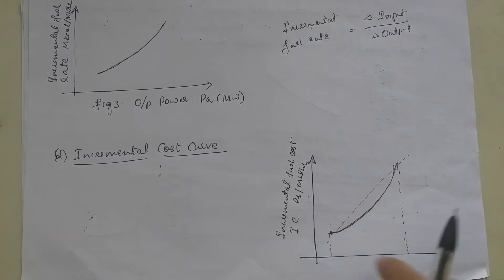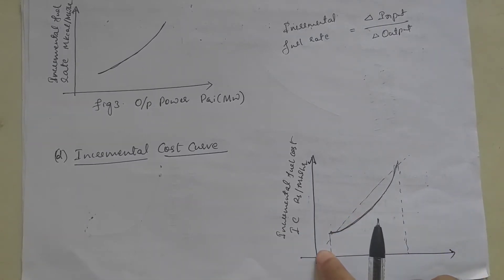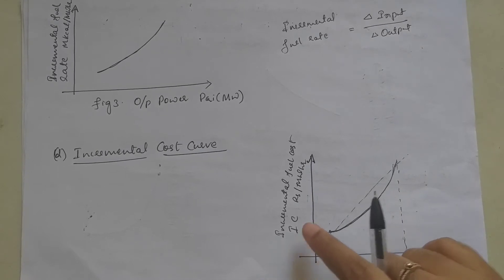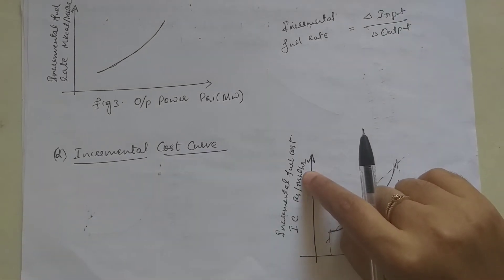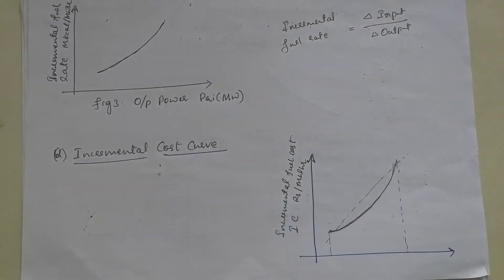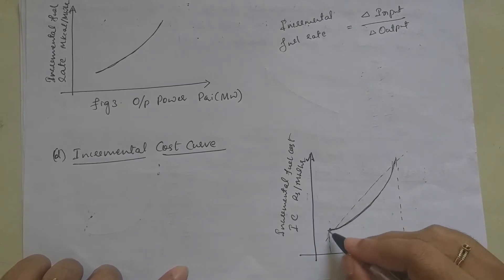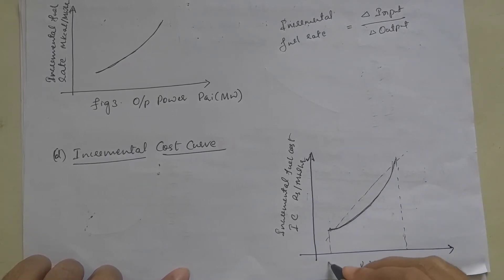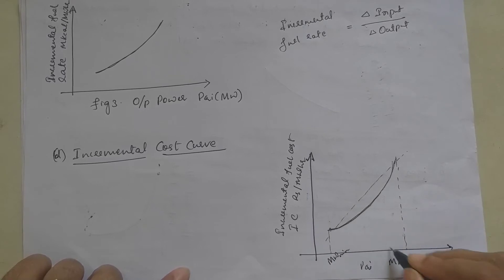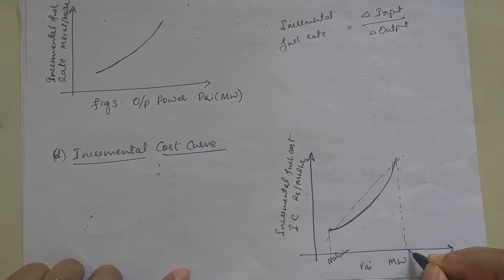The incremental fuel rate curve shows the relationship between minimum and maximum output power, from PGi minimum to PGi maximum in megawatt.